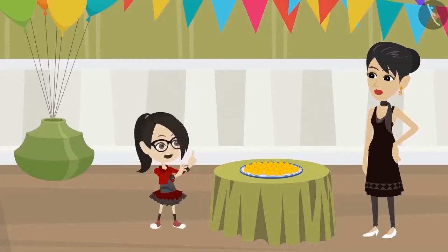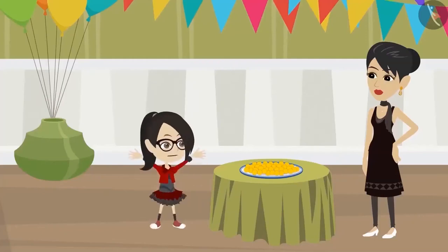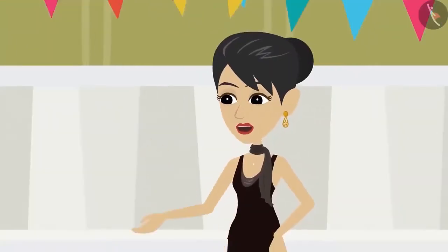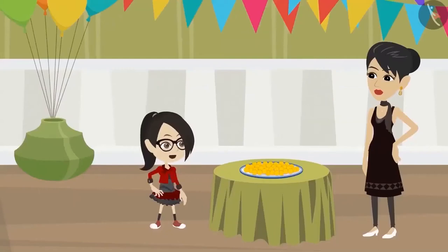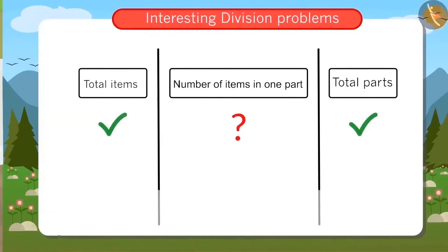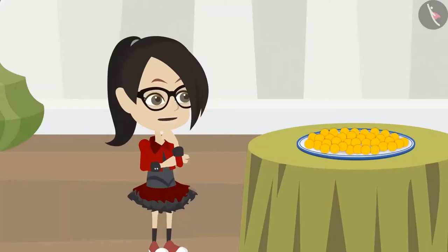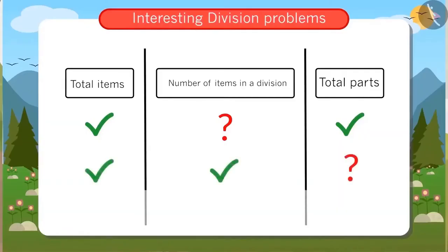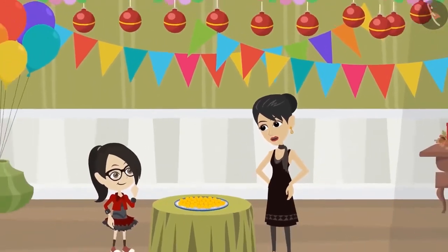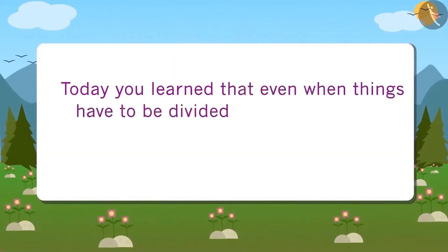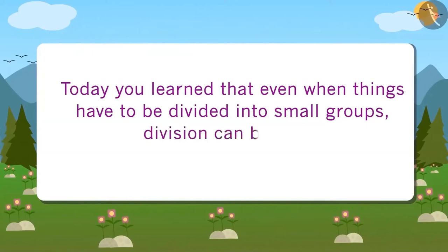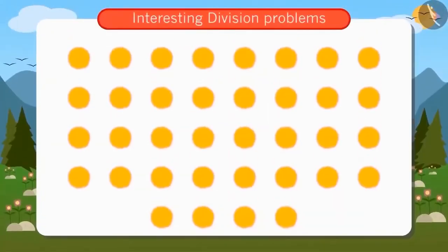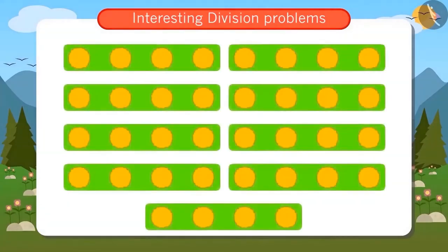Oh wow! That was easy. And I worked so hard to divide the Ladoos into groups. Never mind, Vandana. Now you should remember this simple way. Last time we learnt that when we are given the number of parts and have to find out the number of items in them, we use division. Today we learnt that when we know how many things will come in one part, we still use division. Today you learnt that even when things have to be divided into small groups, division can be useful, just as Vandana divided 36 Ladoos into groups of 4.